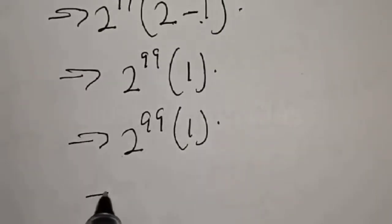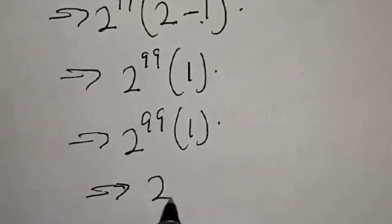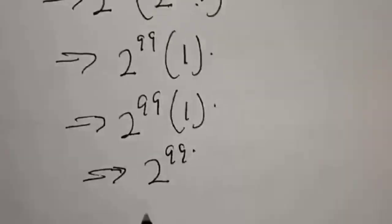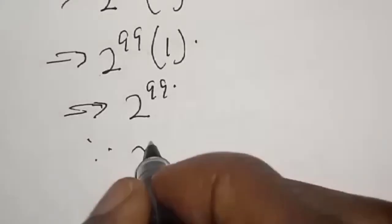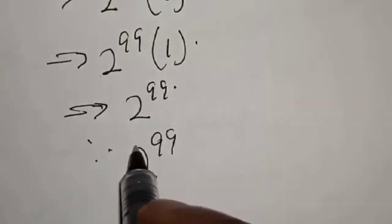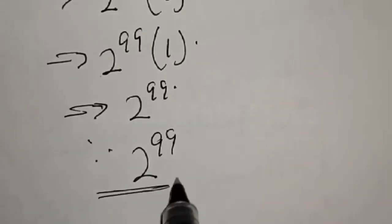2 raised to power 99 times 1 is the same as 2 raised to power 99. Therefore, our final answer is 2 raised to power 99. Please don't forget to like, share, comment and subscribe.